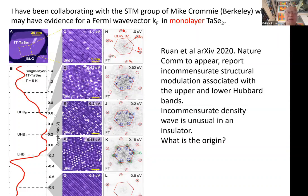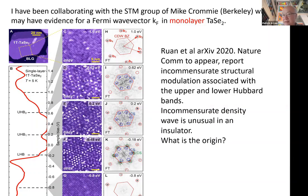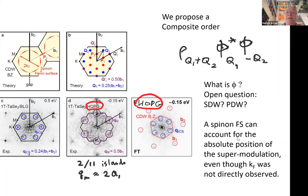An incommensurate density wave is very unusual in an insulator — we see this in metals due to charge density wave formation or nesting, but I don't know of examples in insulators. In spin systems you can have incommensuration from antisymmetric exchange. We proposed that what they see is composite order: a fundamental order not directly visible — possibly a spin density wave or pair density wave — at some momentum q related to a spinon Fermi surface.